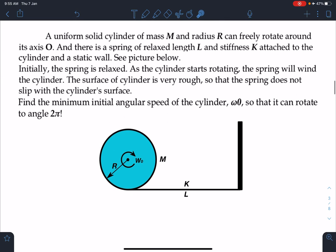Here is the statement of this problem: A uniform solid cylinder of mass M and radius R can freely rotate around its axis O. There is a spring of relaxed length L and stiffness K attached to the cylinder and a static wall. The diagram is given. Initially the spring is relaxed. As the cylinder starts rotating, the spring will wind on the cylinder. The surface of the cylinder is very rough so that the spring does not slip with the cylinder surface.